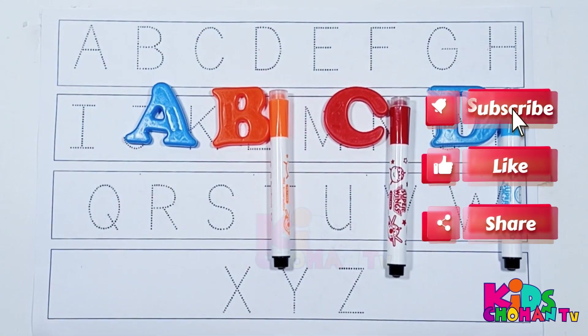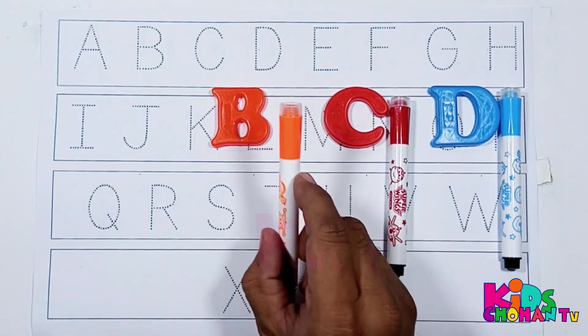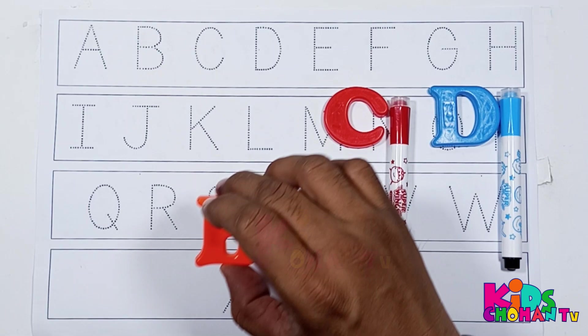Let's start. A with blue color. B with orange color.